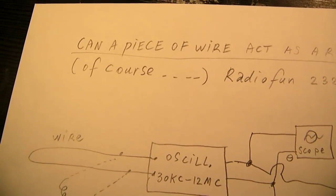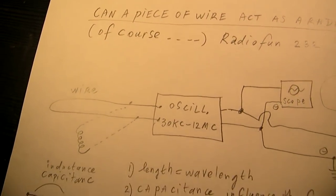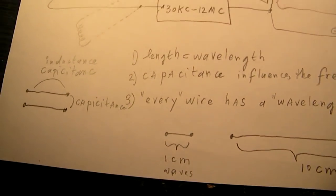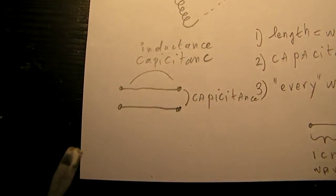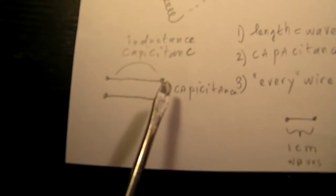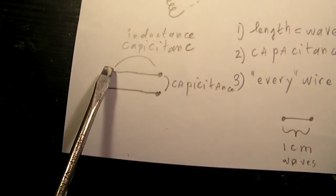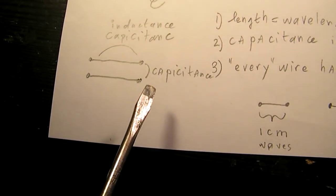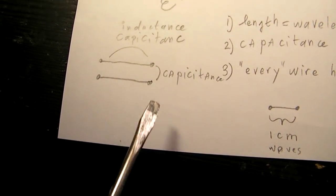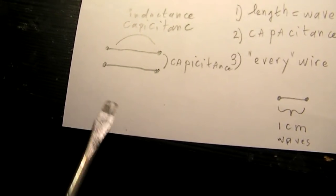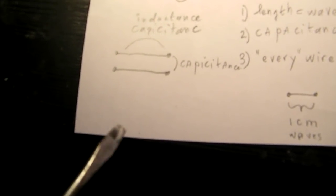So, of course, a piece of wire can act as a coil. It has a specific frequency, and especially when we have two wires close to each other, there is a capacitance here, there is a capacitance here, and there is an inductance here on that wire.